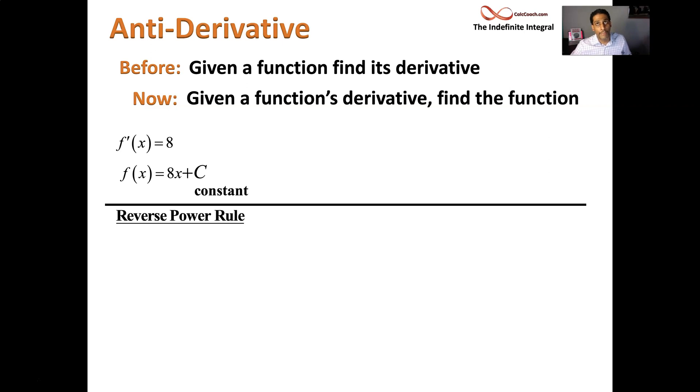How about taking x to a power? Many of our functions are polynomial functions, which have a multitude of terms that are of this form, x to the n. How about that? It turns out that if x to the n is the derivative, the function who that is the derivative of is x to the n plus 1 over n plus 1. Okay. Plus a c.